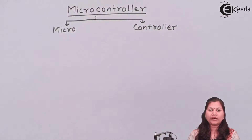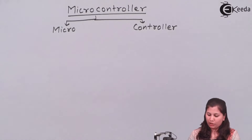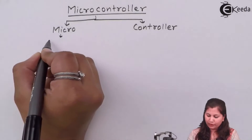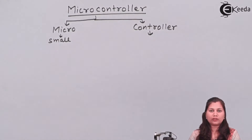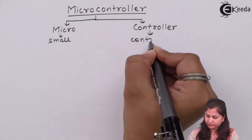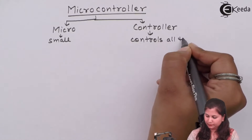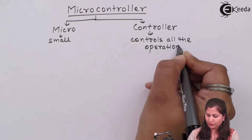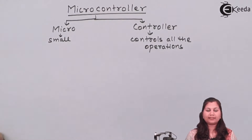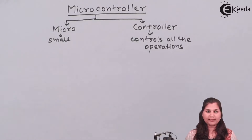Micro means very small in size and controller means a device which controls the operations of all the devices. So microcontrollers are devices which are very small in size and they control the operations of all the other devices.